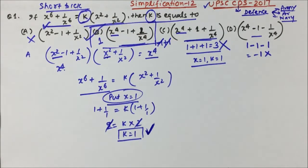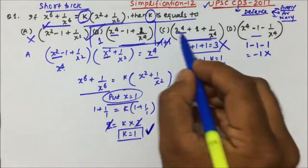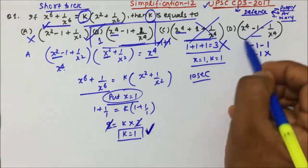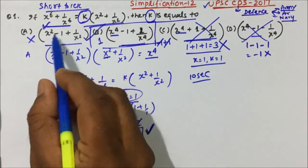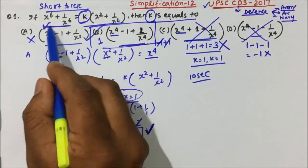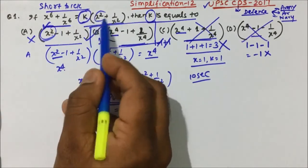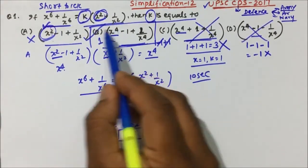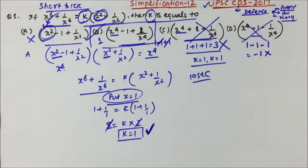If you want to solve this question, it will maximum take 10 seconds, because you directly put the value of x, 2 options get eliminated, and 1 option you can eliminate just by seeing — because if k equals x squared and it multiplies with x squared, it gives only x to the power 4, but you need x to the power 6.